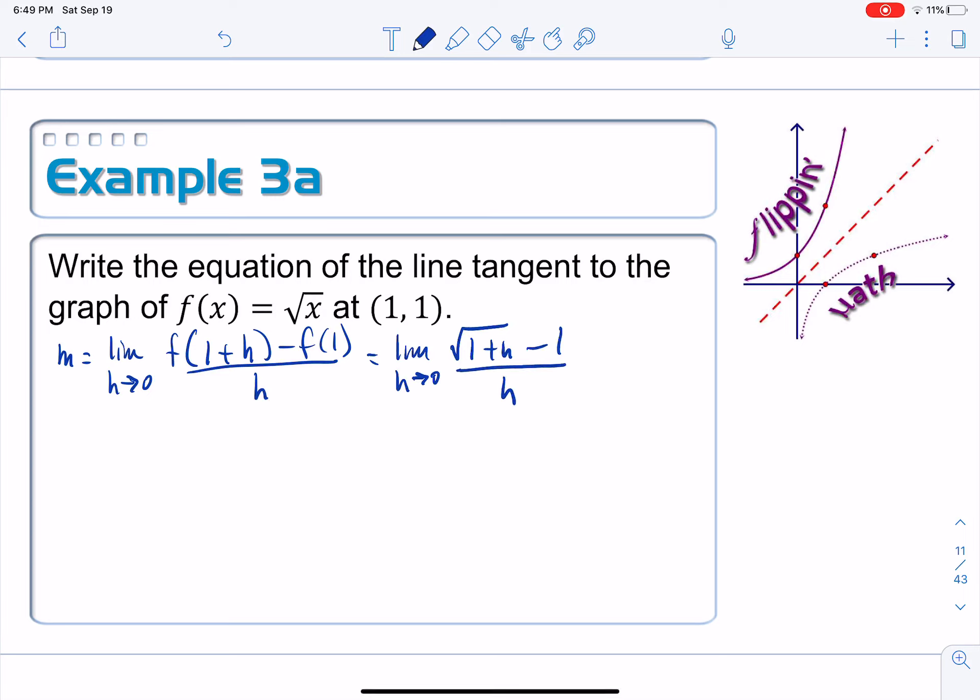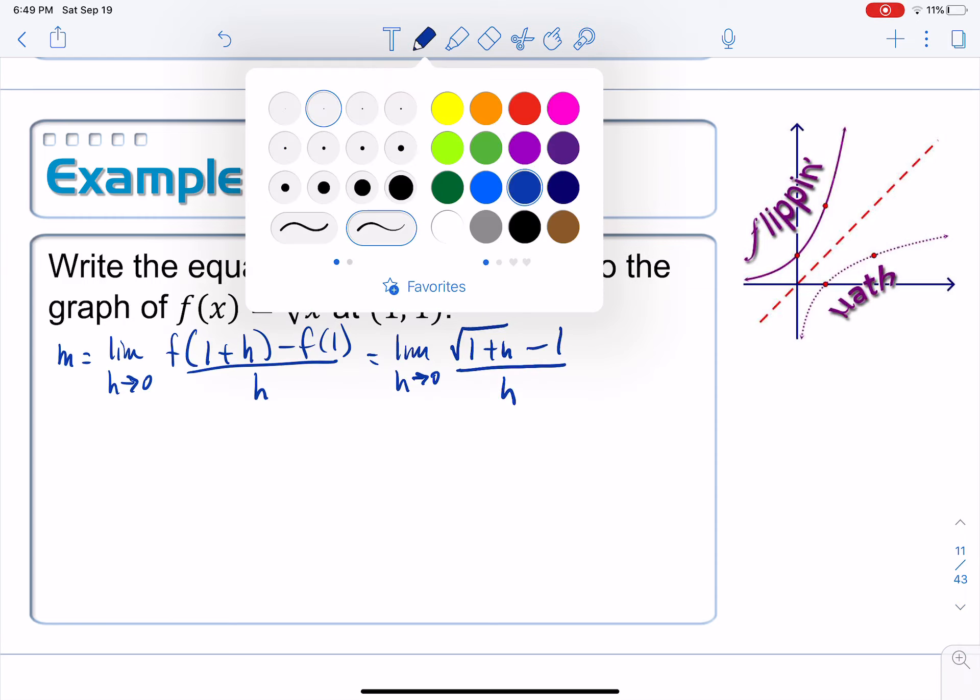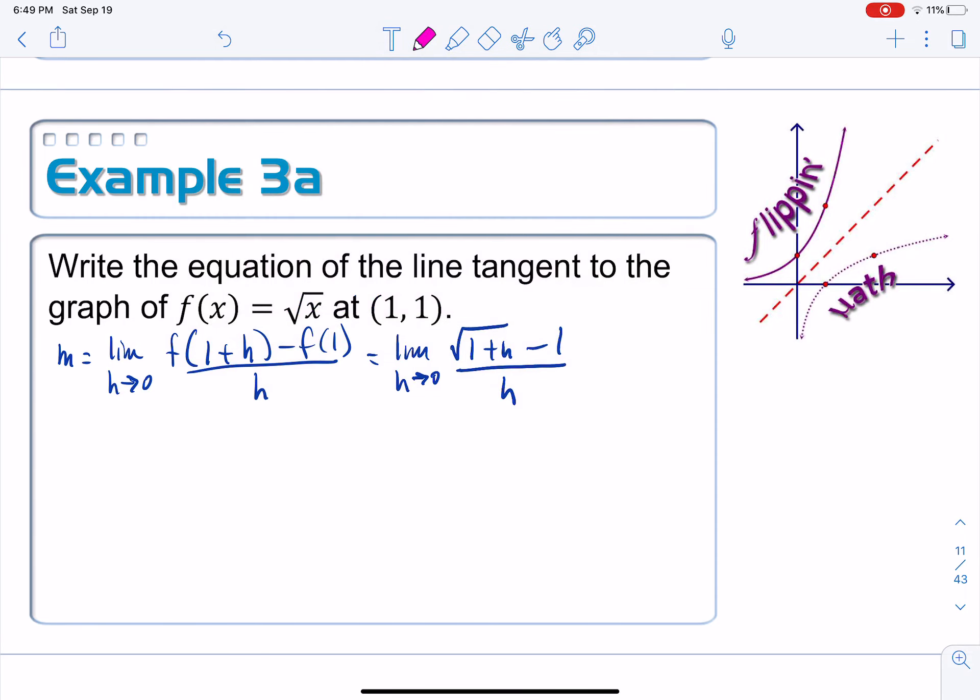My gosh, I wonder what we would get if we were to just stick in 0 here. Let's see. I'll get square root of 1 is 1. 1 minus 1 is 0. And then over 0. 0 over 0. Well, look, I've got square roots. How can I fix this indeterminate form of 0 over 0 when you have square roots? Could you possibly maybe rationalize it by multiplying by a conjugate.